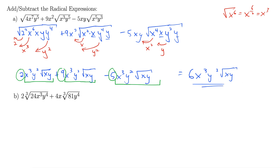They won't always simplify down to just one term — a lot of times you'll get two terms — but certainly the ideal problem simplifies to a single term. For part b, we have 2 times the cube root of 24x cubed y to the 4th, plus 4x times the cube root of 81y to the 4th. Here we're looking for powers of 3 inside the radical, because it takes a power of 3 to get out of a cube root.